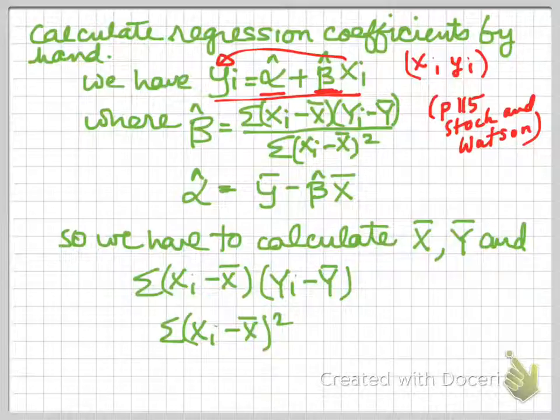So it tells us how much a one unit change in the x variable leads to, if we're interpreting it as a causal framework, how much a one unit change in x leads to change in y. So that would be the slope, the parameter beta hat.